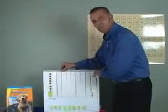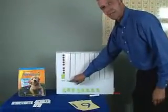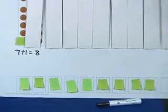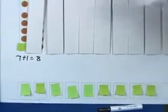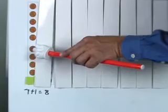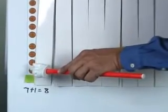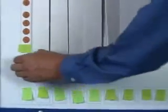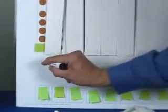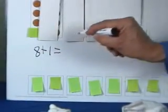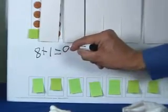Now let's take a look at our money flip chart. What number did we have yesterday? We had the number eight. If I remove one more sticky note, how many pennies do we have altogether? Let's count: one, two, three, four, five, six, seven, eight, nine. We now have nine pennies. We need to change our equation here. We started out with eight pennies and we added one more penny. How many pennies do we have altogether now? Nine pennies.